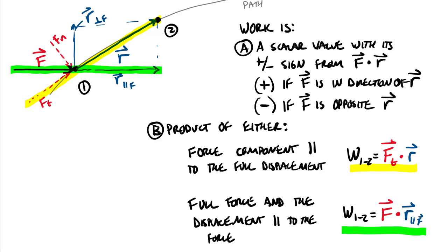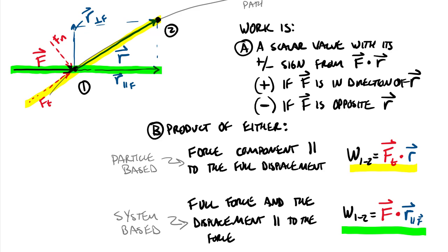The first approach — using the tangential force and full displacement — is a particle-based approach. When drawing a free body diagram you're likely to think about that tangential force and the full displacement R. The second approach — using the full force and the displacement component parallel to it — is a system-based approach. Our upcoming example will actually be a system-based approach problem, though you can solve it either way. Some problems are much easier with a system-based approach, looking at the displacement of the force rather than the force component in the direction of displacement.